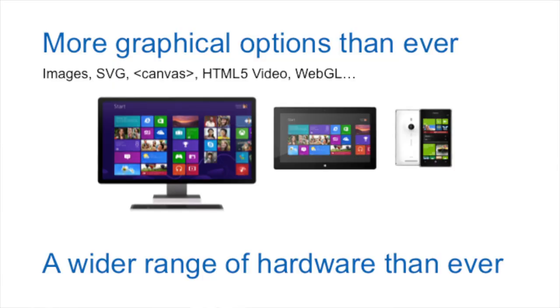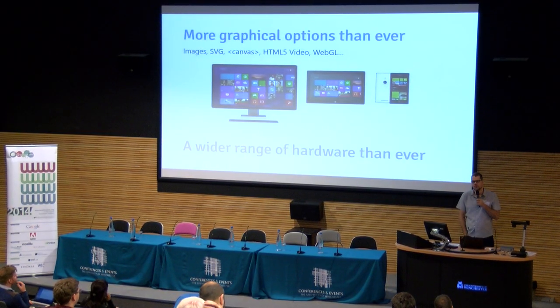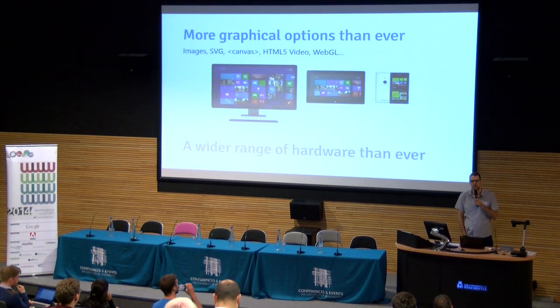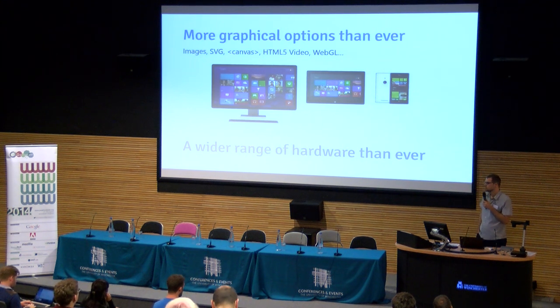Now is an interesting time to be working in a web browser. We have more graphical options than ever when it comes to doing something on the web, but you also have a wider variety of hardware than ever before. The user's expectation is that the web should work equally well across all these devices. It gets much, much trickier when you have a low-end, low-power phone. As a web browser developer, it's really tricky to enable this across all the hardware, and we do a couple of tricks that we'll go through.